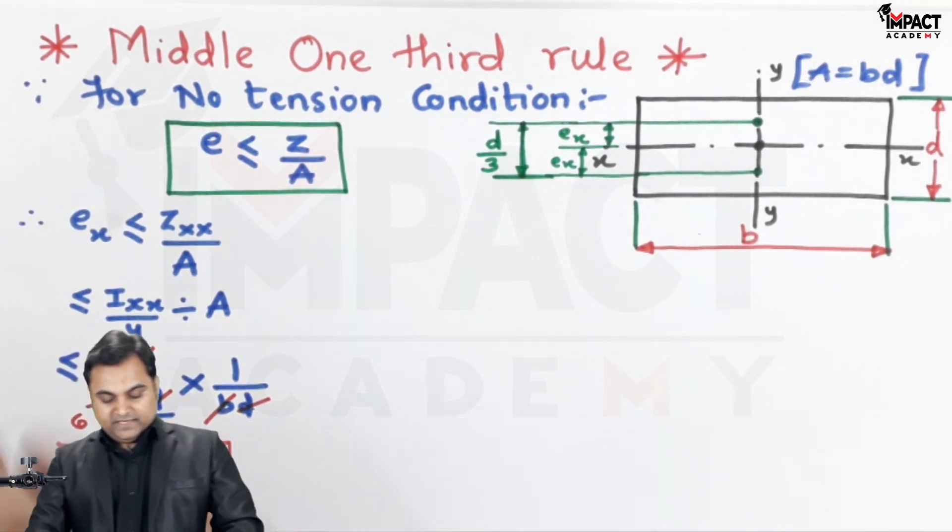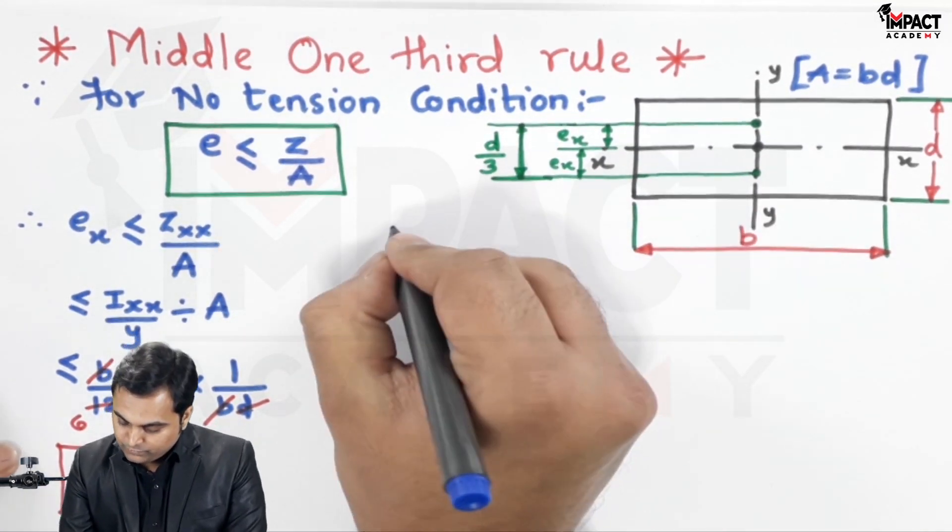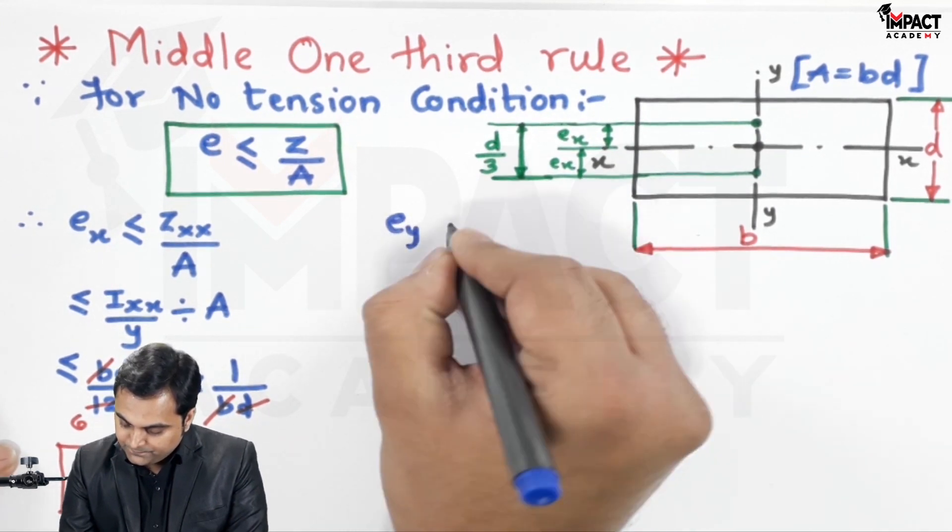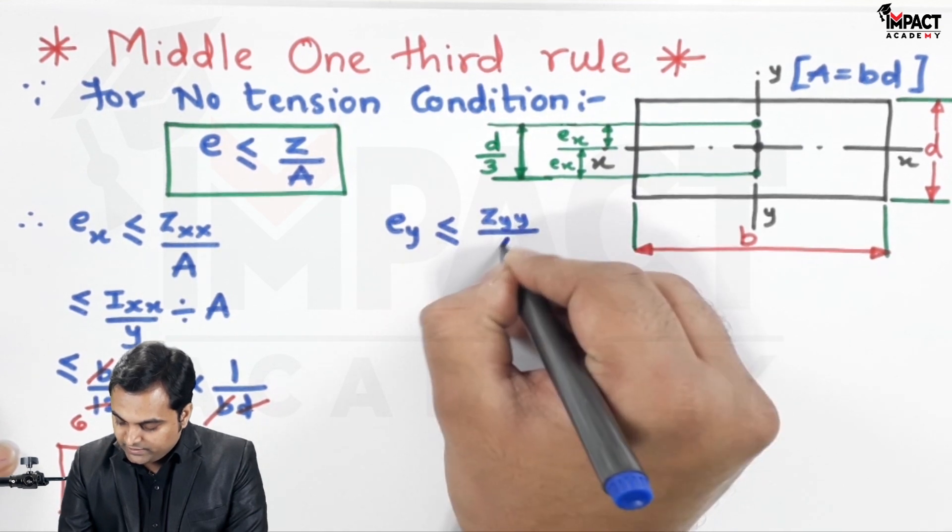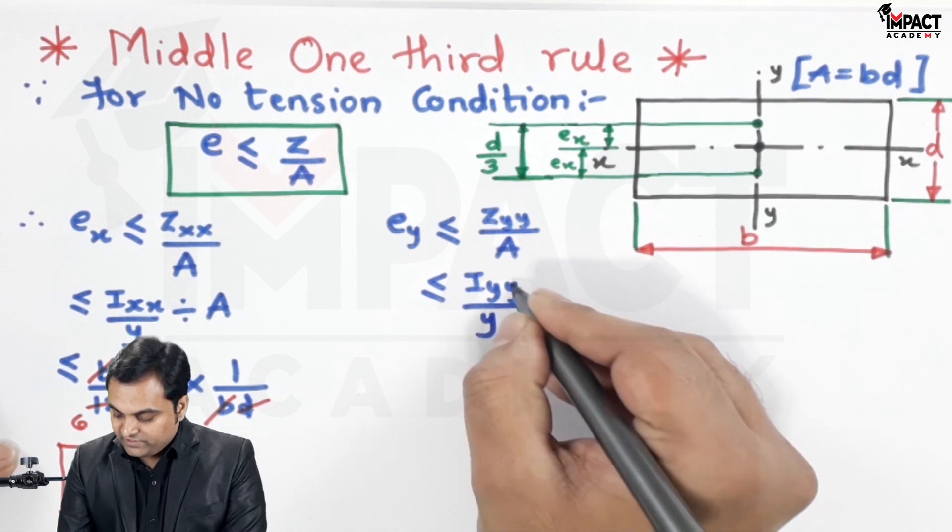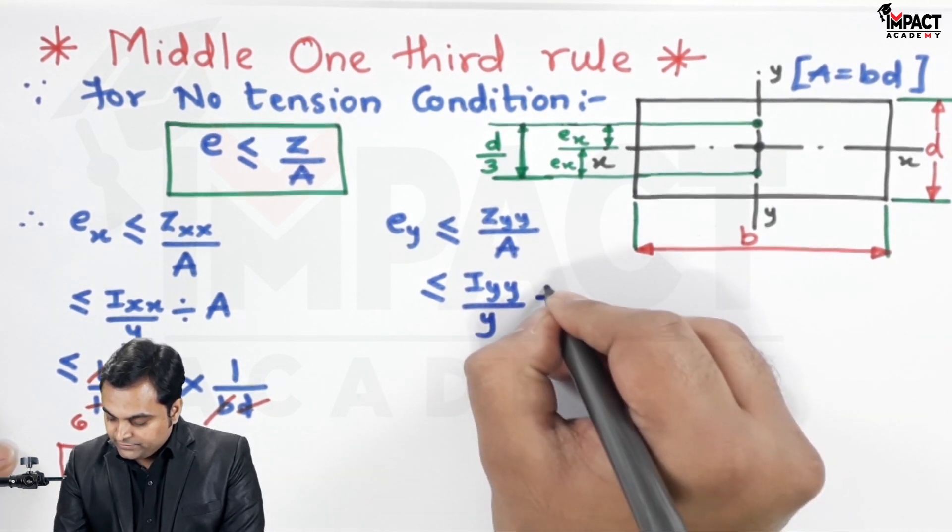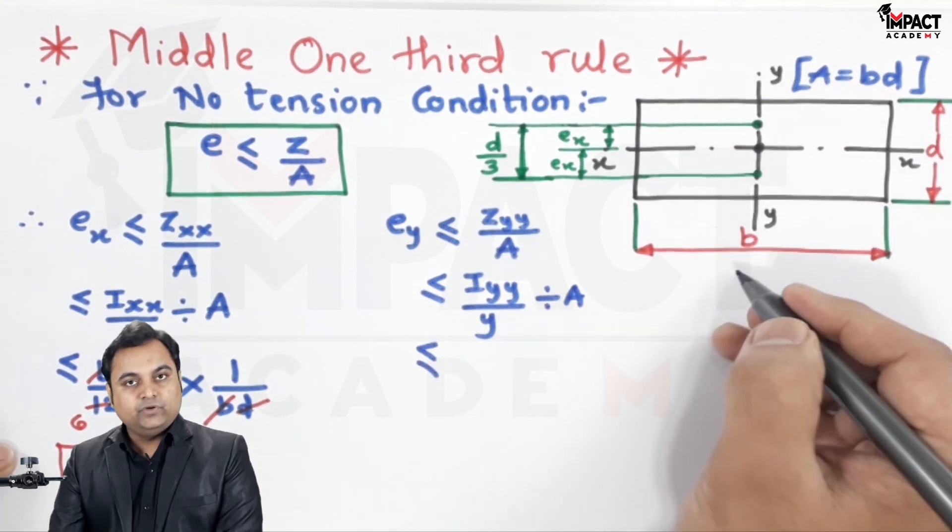Then similarly I will go for eccentricity with respect to y-axis. So e_y, again no tension condition, it would be Z_yy upon area. Z_yy is I_yy upon y divided by area. I_yy for a rectangular section is...